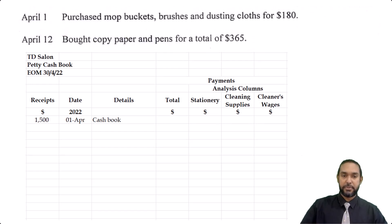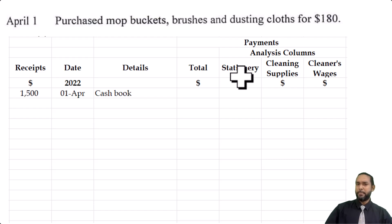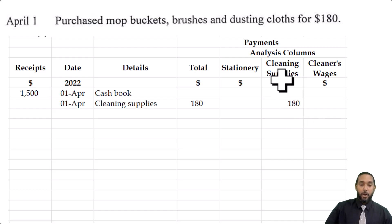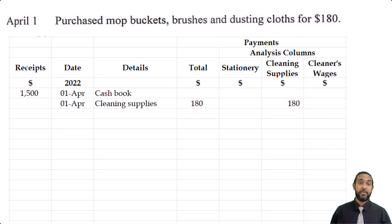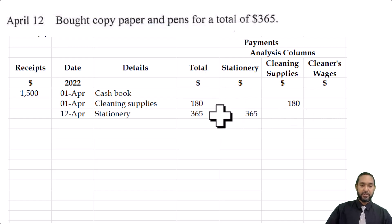On April 12th, copy paper and pens were bought for a total of $365. Copy paper and pens are definitely stationery, so $365 goes under the stationery column and also in the total column. Details: stationery, date: 12th of April. It doesn't matter if you go left to right or right to left — as long as you put the correct information in the correct place, you're fine.